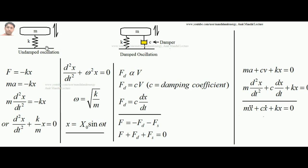In case the mass is subjected to damping effects, this is the symbolic diagram showing the damper provided. The damper produces a force on the vibrating mass, and the damping force is proportional to the velocity of the mass at an instance of time. More the velocity of the mass, more the damping force will be. To remove this proportionality, we apply c, called the damping coefficient. So the damping force is given by cv, where v = dx/dt.